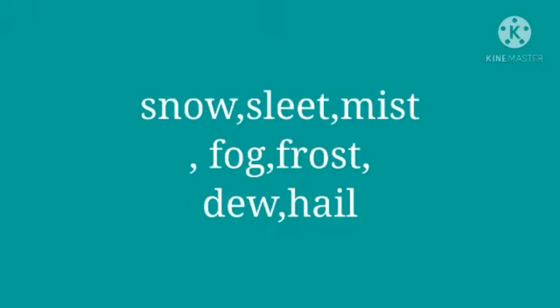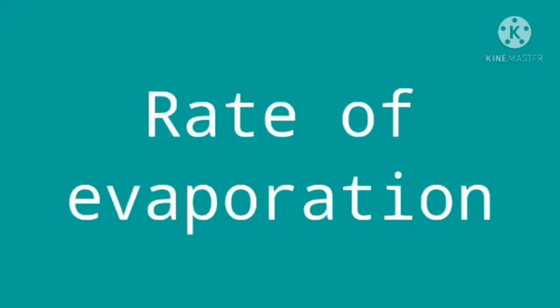The uses of water vapor: water vapor determines Earth's climatic conditions. The presence of water vapor in air causes rain. At low temperatures, water vapor condenses to form snow, sleet, mist, frost, dew, fog, etc. Water vapor controls the rate of evaporation from the bodies of plants and animals, and it is essential for the growth of plants and the good health of animals and human beings.